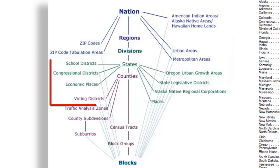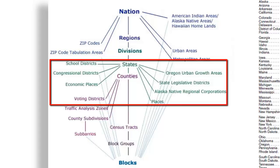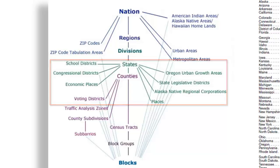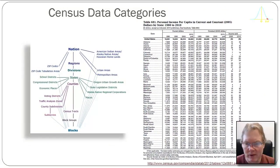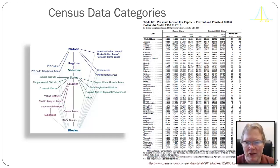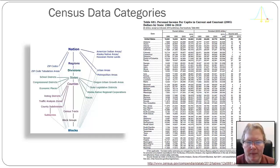For example, at the state level you can see that the Census Bureau produces reports on school districts, congressional districts, economic places, and so forth. I like this table on the right, not because I'm so interested in the data in it, but because it shows you how to build a truly good table.